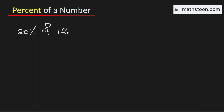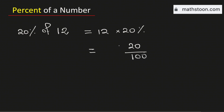To find 20% of 12, we need to multiply 12 with 20%. We know that 20% is 20 over 100, and we need to multiply this with 12. Now let us cancel the common zero.